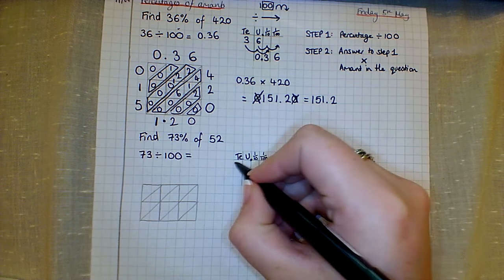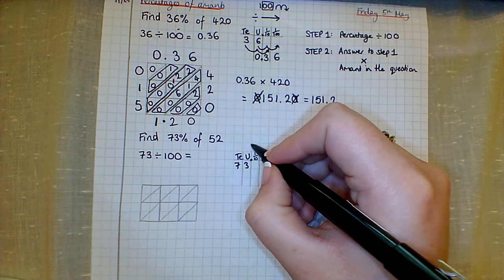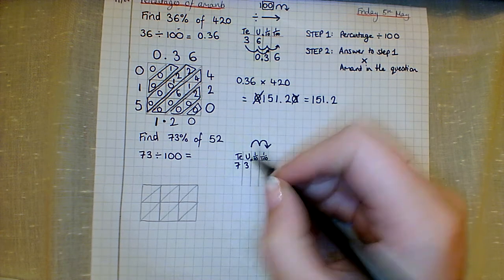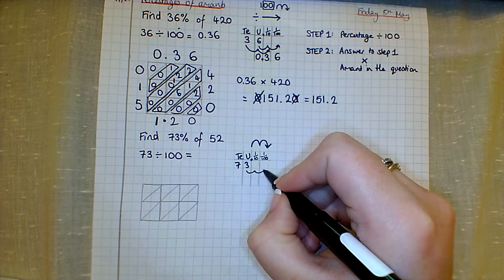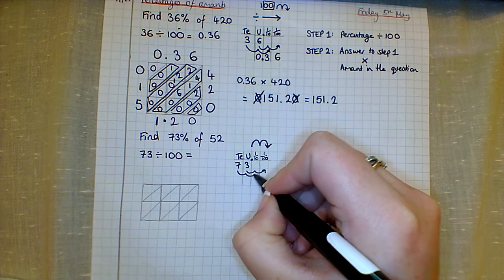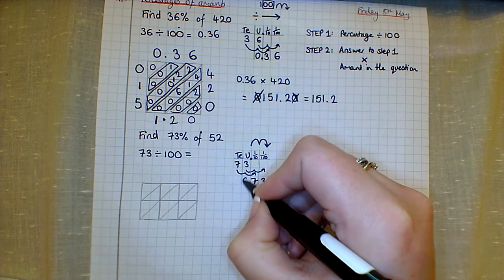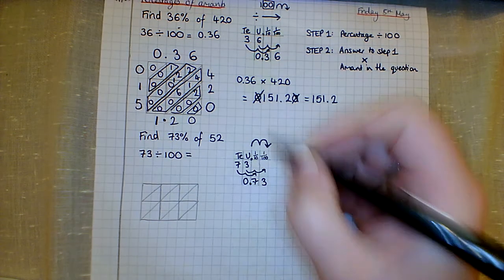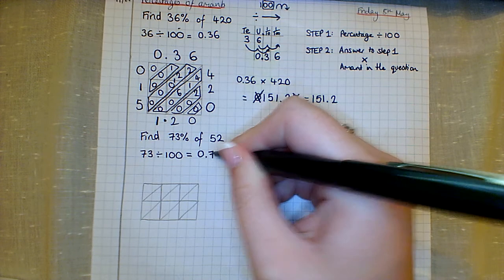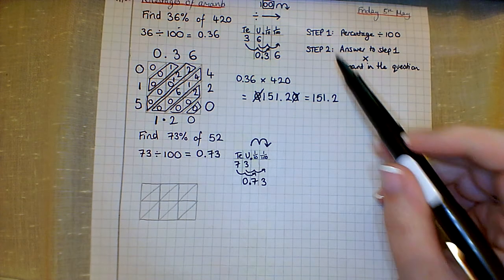Your percentage, which is 73, divided by 100. 73 starts in here. Because we're dividing by 100 we're going to move everything two to the right. So that moves to this column, that moves to this column. Decimal point column is here, so we have to add in an emergency zero. That is equal to 0.73.